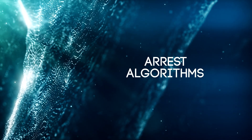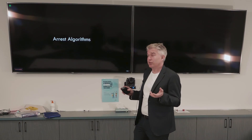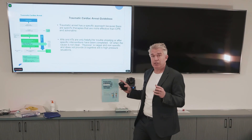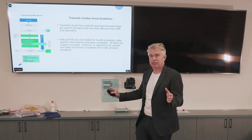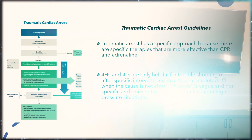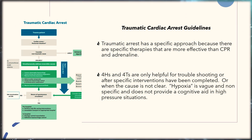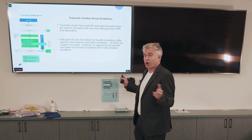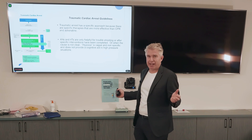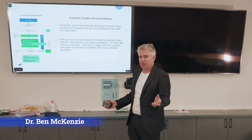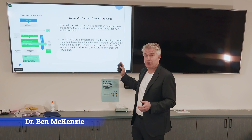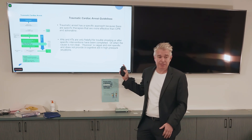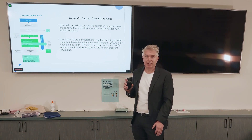The next section is about arrest algorithms, and there are really some important concepts here. I'm going to draw some parallels to another scenario in emergency, which is trauma. Traumatic cardiac arrest guidelines have been accepted and have evidence showing they improve outcomes, now published in the literature. We hope to get a traumatic arrest before they're asystolic — when they're pulseless or before — so we can do specific interventions that are much more effective than CPR and adrenaline.